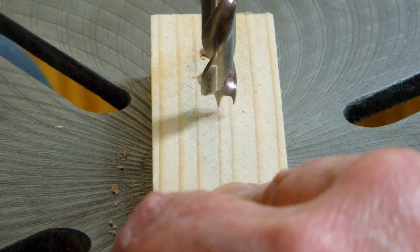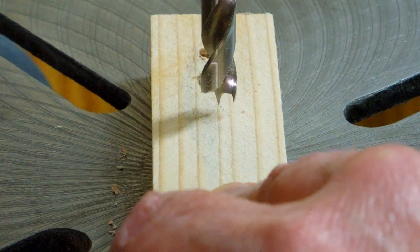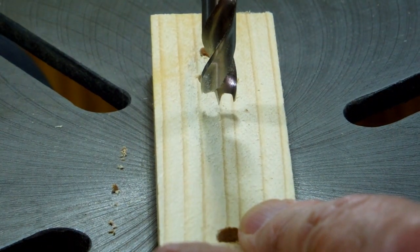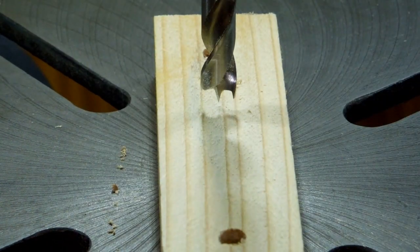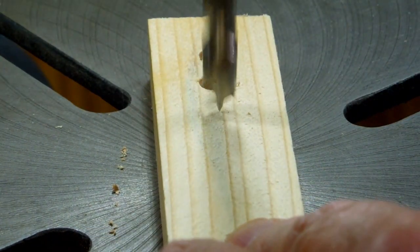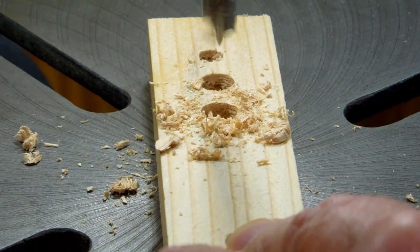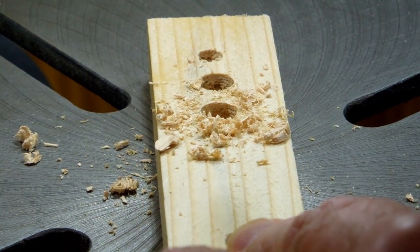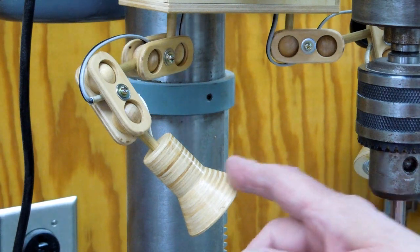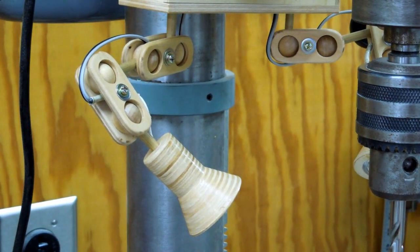That's with the light off. You can see the strong shadows from the shop light. When I turn it on the point of the bit shows up very clearly. I'm working on another configuration of this for use on my bandsaw and I'll post a separate video on that.